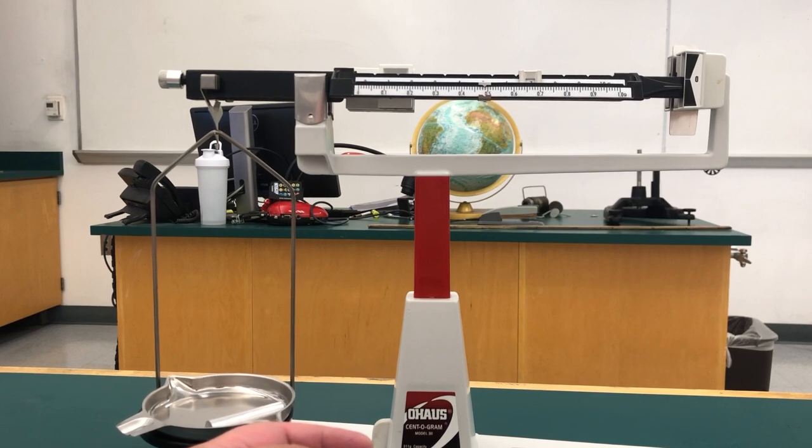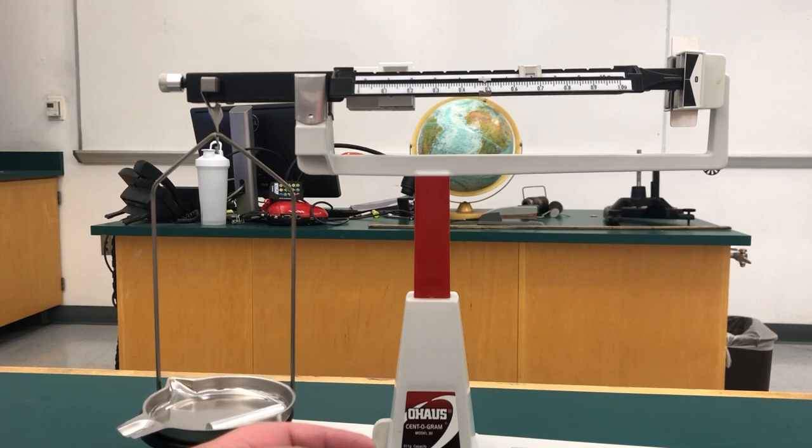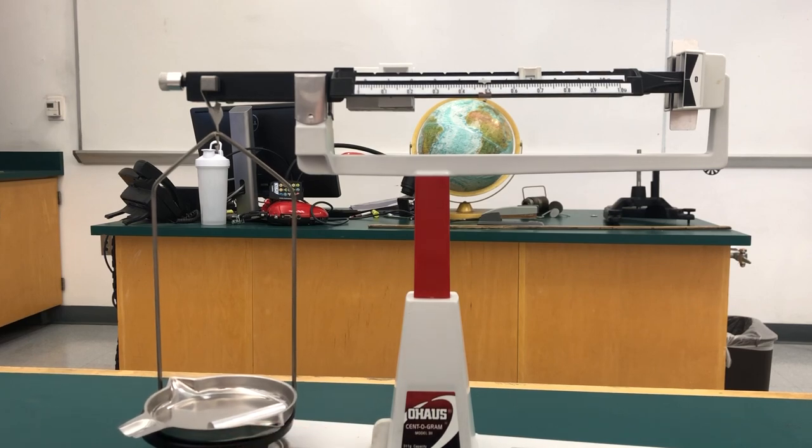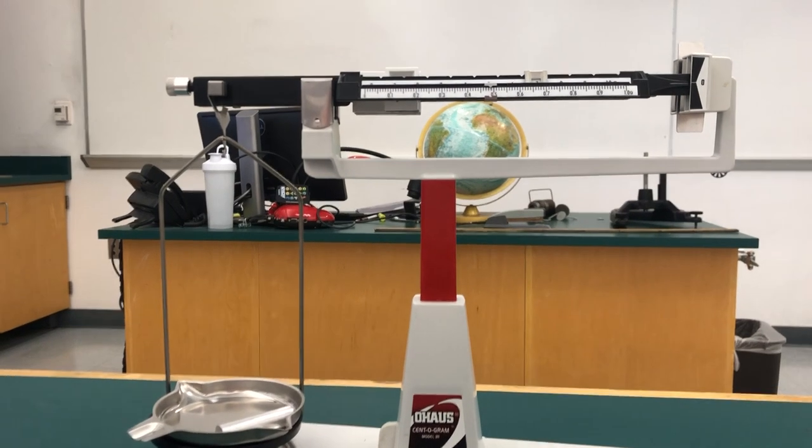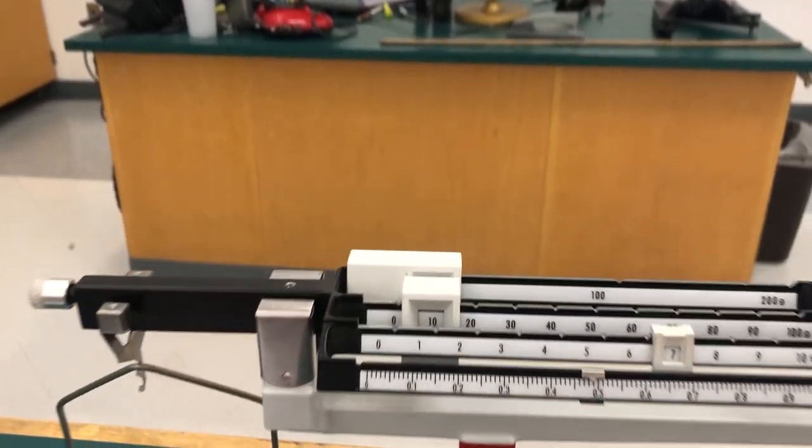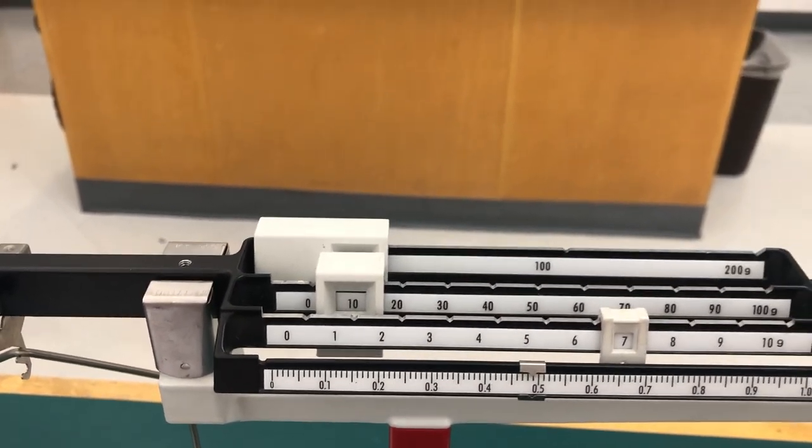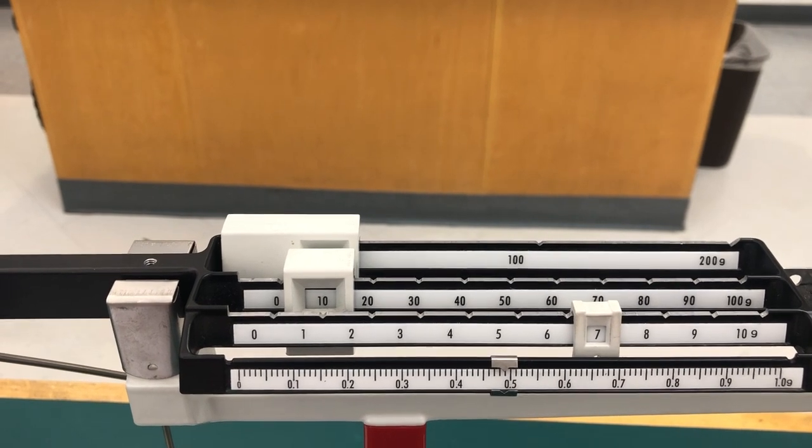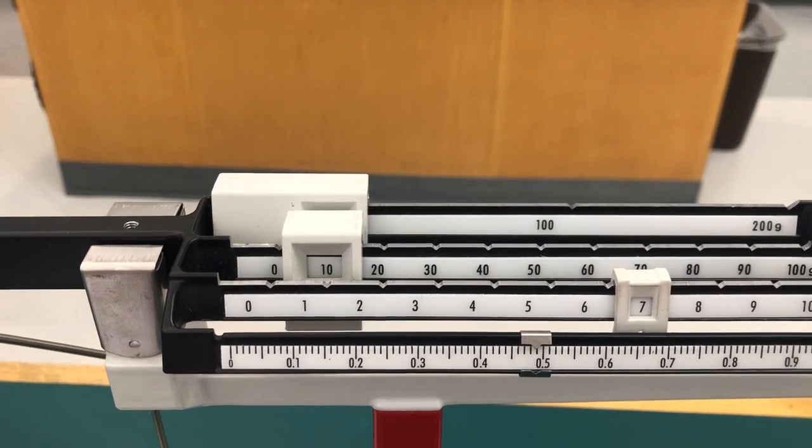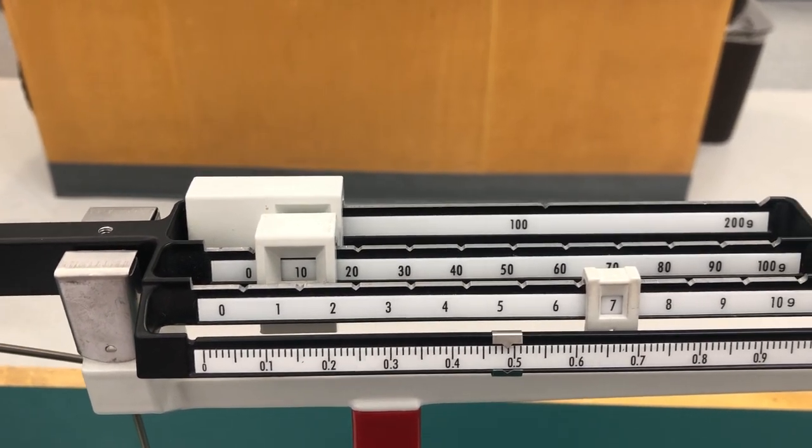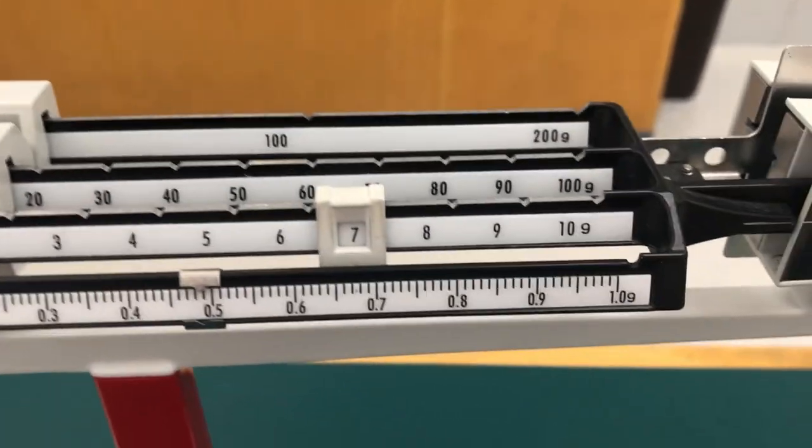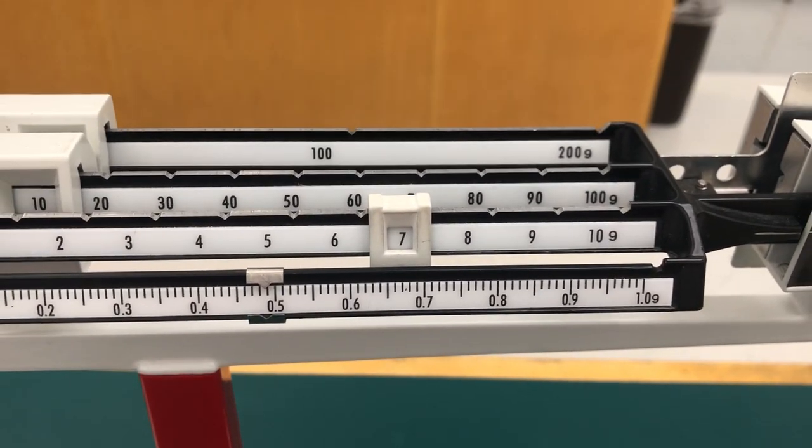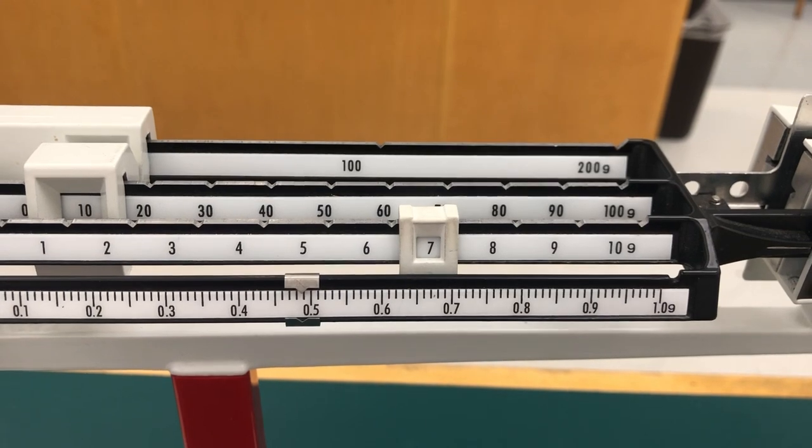It's balanced again. Now you add up all that you see. Zero for 100 and 200, so nothing there. Then you have 10 grams, seven grams. So the total is 17 grams.